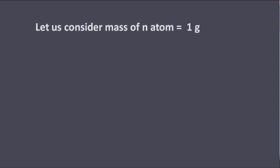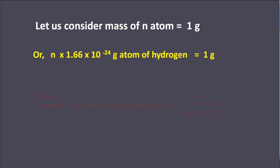Let us consider mass of N atoms of hydrogen is equal to 1 gram. So N into 1.66 into 10 to the power minus 24 gram per atom of hydrogen is equal to 1 gram.